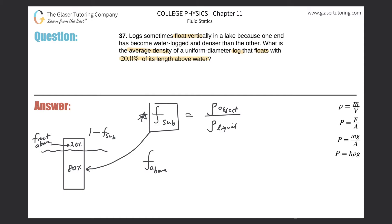So fraction above is simply equal to one minus the fraction submerged. We know the fraction above from the problem—20%. But what are we after? The average density of the log. So I need to take the first equation and substitute it in for fraction submerged. So we have fraction above equals one minus the density of the log divided by the density of the water.